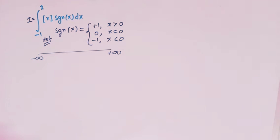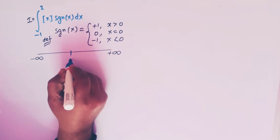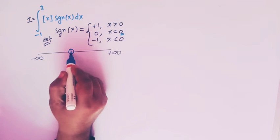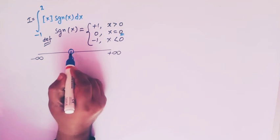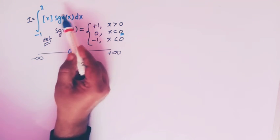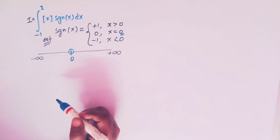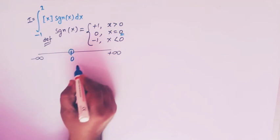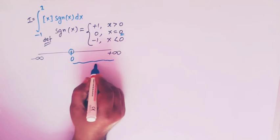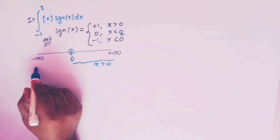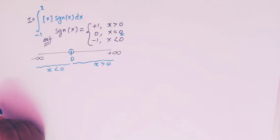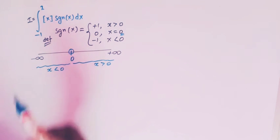Now let us take the number line, with minus infinity on one side and plus infinity on the other. We have the point zero on this real number line, and at this point zero we will break this integral as a sum of two integrals — one where x is greater than zero and one where x is less than zero.